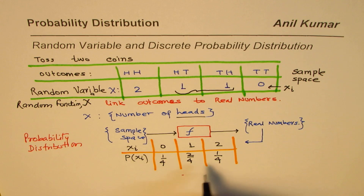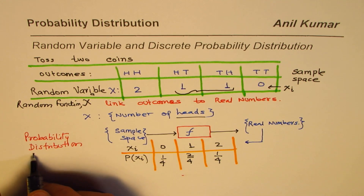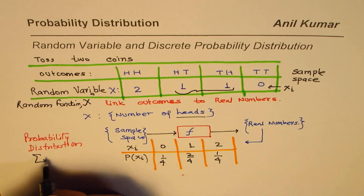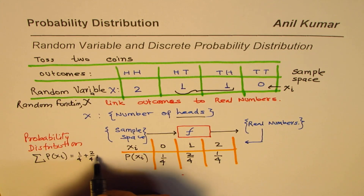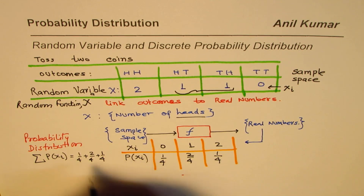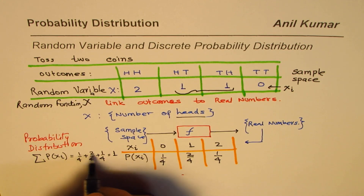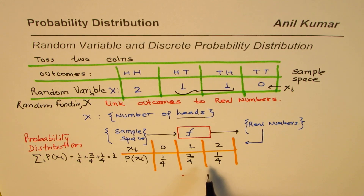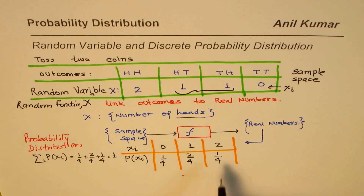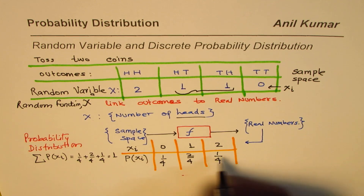You'll also notice that the sum of these probabilities — sigma — is 1. If you add them up: 1/4 plus 2/4 plus 1/4 equals 4/4, which is 1. So the sum of these probabilities is 1. This is important to note. Another important thing is that all these probabilities are positive numbers.